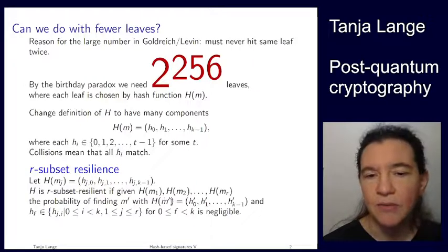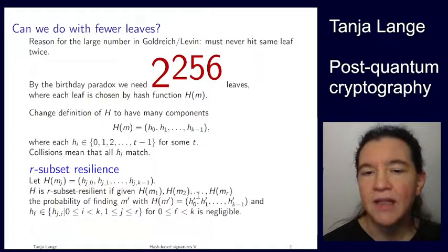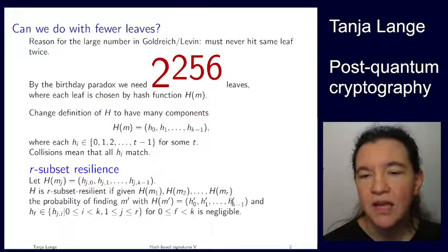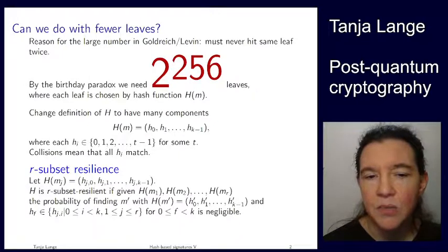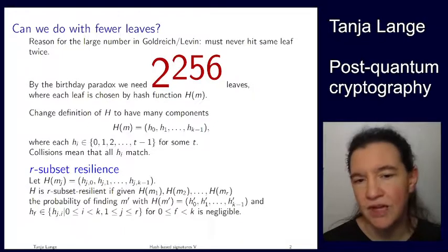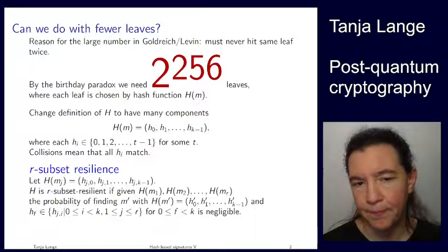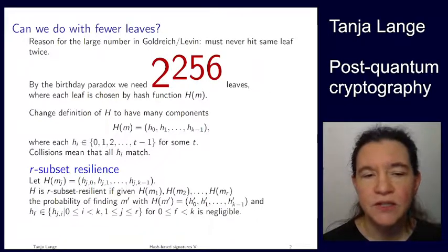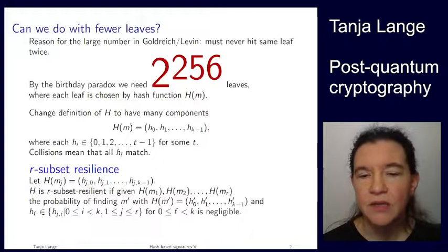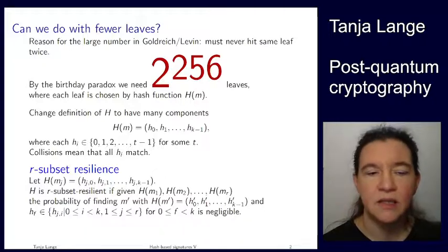If when you're given these r inputs, then you have a negligible probability of finding some m prime so that you can mix and match the output of the hash function. So mix and match means there is an m prime, you're computing the hash of it. And then each of those hi prime is a part somewhere in one of these h.